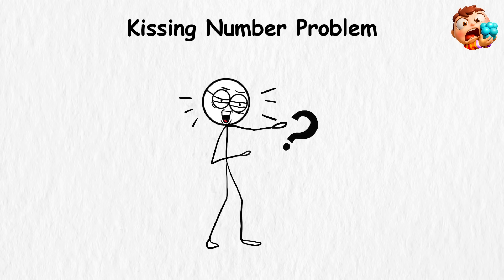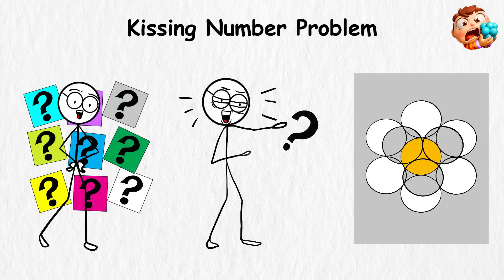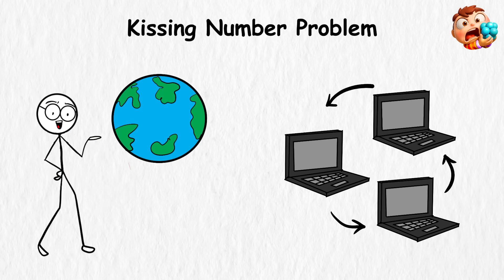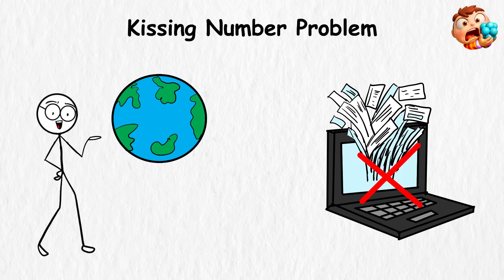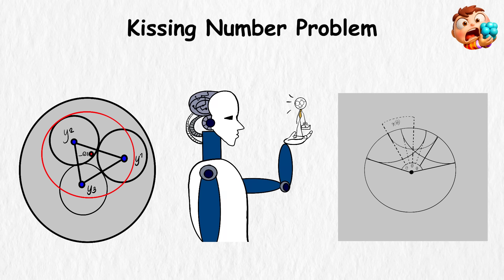That's where the problem is. Past three dimensions, nobody really knows the kissing number for sure. And this isn't just trivia. The same math shows up in real world stuff, like how to pack data into computers without wasting space, or how to send signals so they don't get mixed up. So cracking the kissing number in higher dimensions could actually change how technology works.